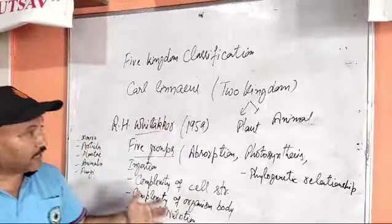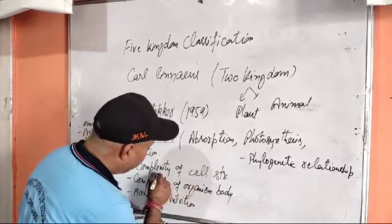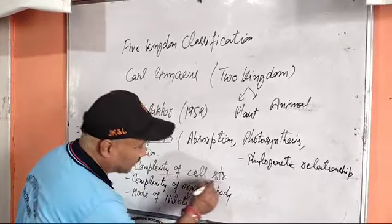In these five groups, there are many bases of classification, such as absorption, photosynthesis, phylogenetic relationships, and ingestion. The main basis is the complexity of the cell structure.